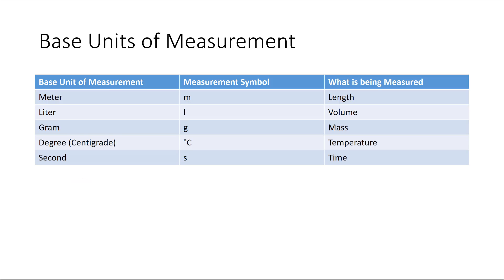I'd like to introduce you to the base units of measurement within the metric system. For measuring length, we have the meter, symbolized by a lowercase m. For measuring volume, we have the liter, marked by a lowercase or capital L — either works. Gram, represented by a lowercase g, is used for measuring mass. Degrees centigrade is used for measuring temperature, and seconds are used for measuring time.